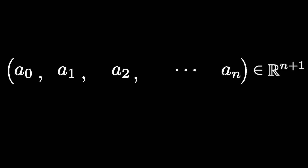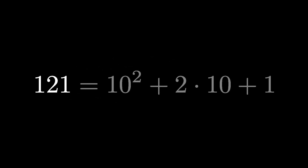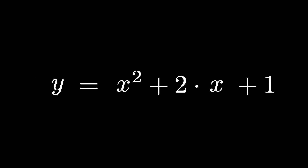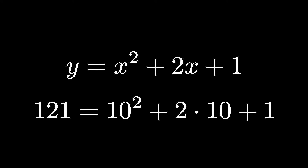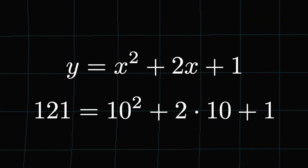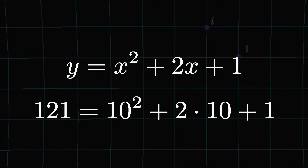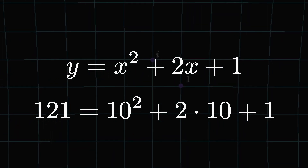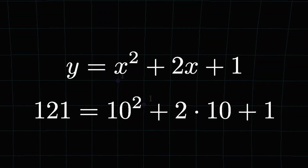Every time we write a number in base 10, we're really representing that number as a polynomial. For example, the number 121 is just the polynomial x² + 2x + 1 when x equals 10. But the difference between writing numbers in base 10 and polynomials is that with polynomials the coefficients can be real numbers or complex numbers, whereas in base 10 we're only allowed to use a finite number of digits, 0 through 9.